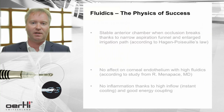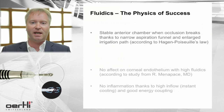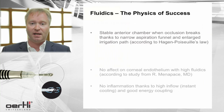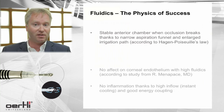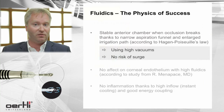High fluidics can be applied safely because of the laws of physics. Hagen-Poiseuille's law shows that if you create a narrower aspiration funnel, you are not at risk of surge if the occlusion breaks. On the other hand, active aspiration is not affected by the narrow aspiration funnel. So this gives you two advantages: you can apply high vacuum rates and you have the safety of not being at risk of surge.